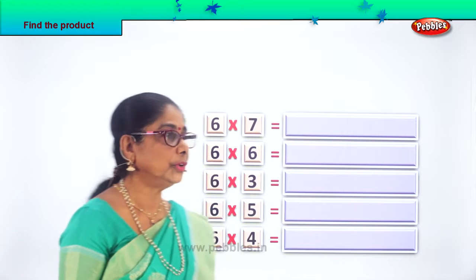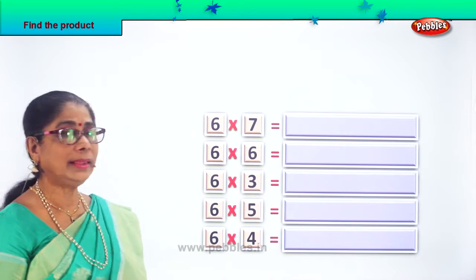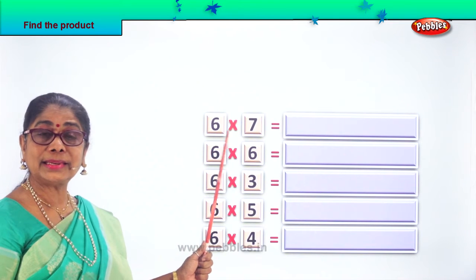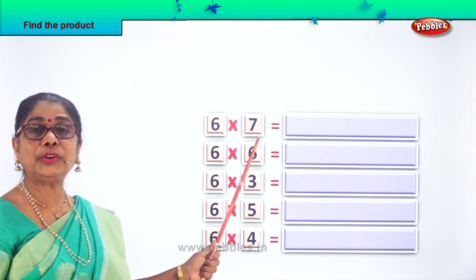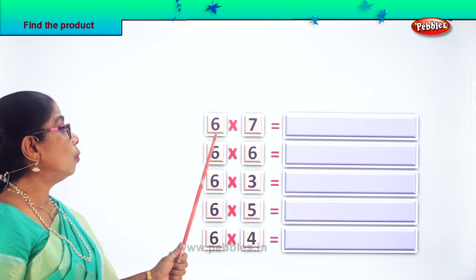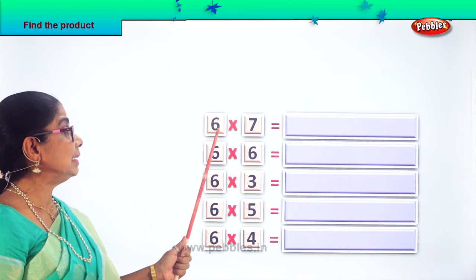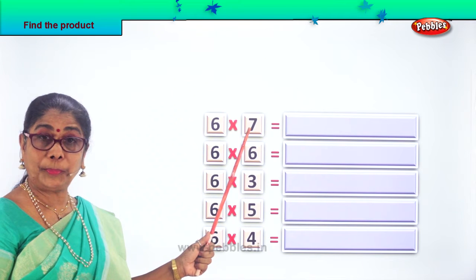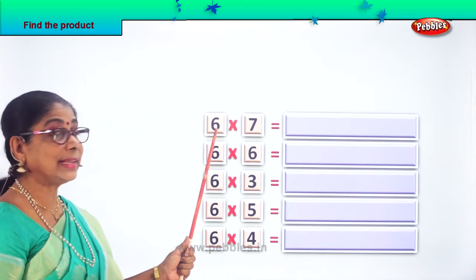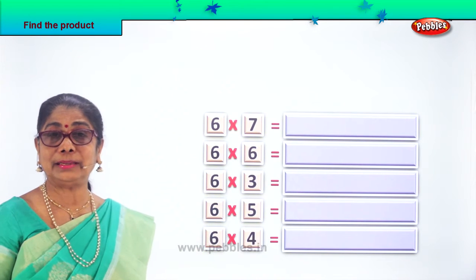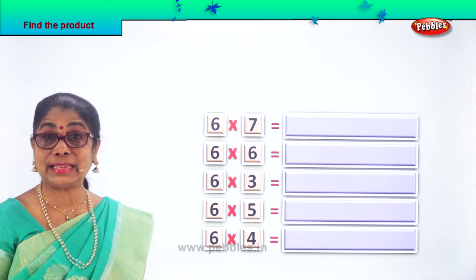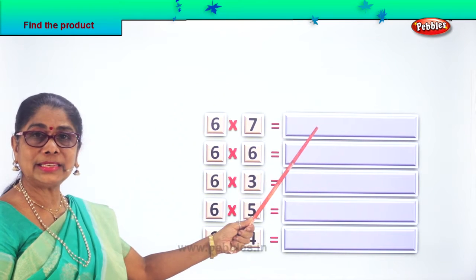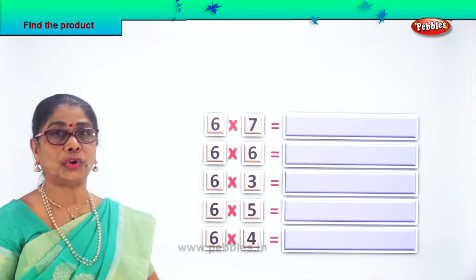Find the product. Here we have 6 into 7. We have to find the product of 6 into 7. What is the method we are using? Repeated addition. So 6, how many times? 7 times. We will write here 6 plus 6 plus 6 and it goes on.